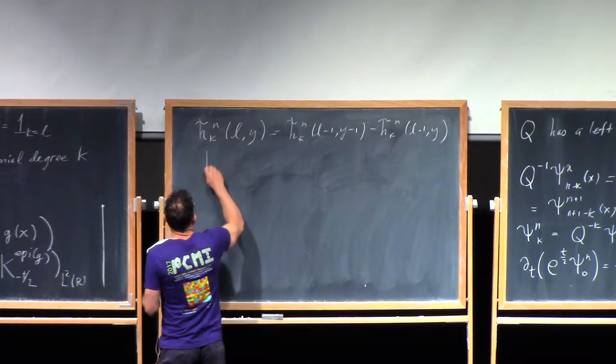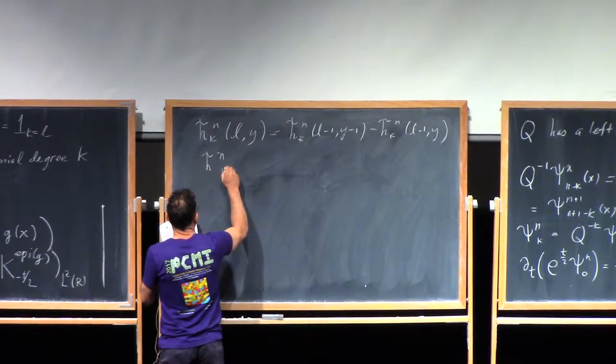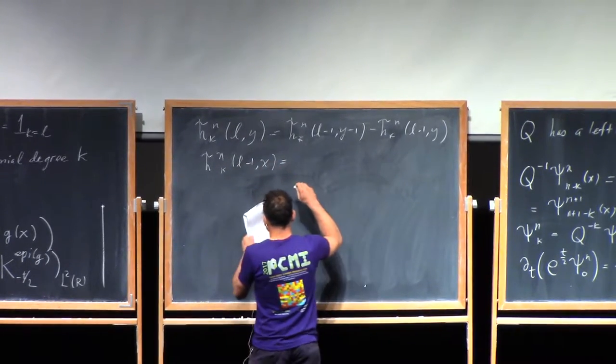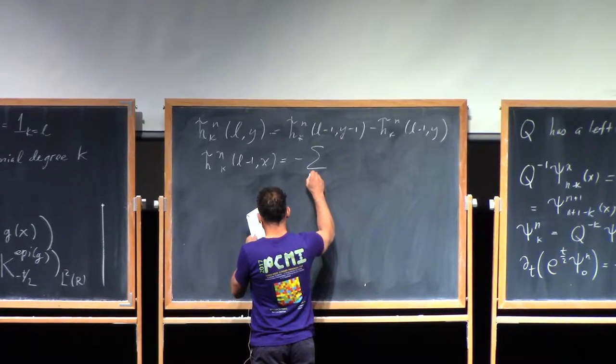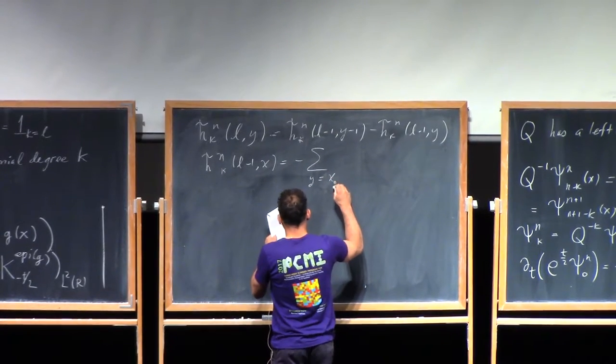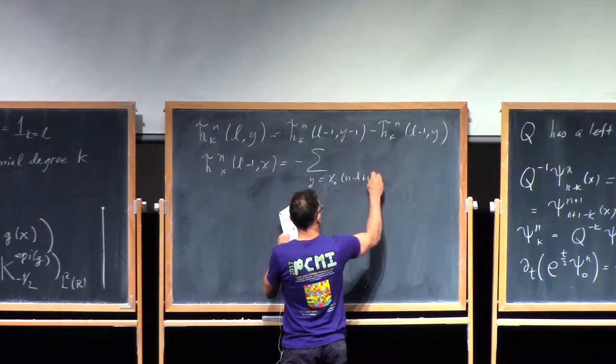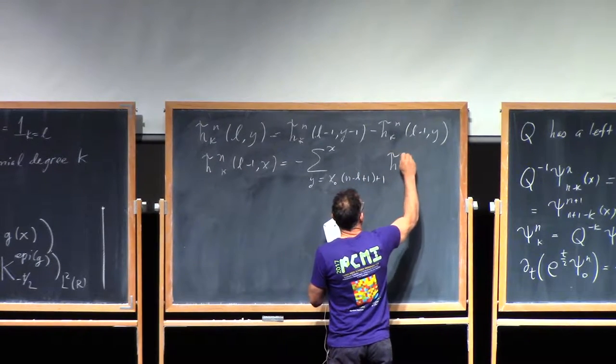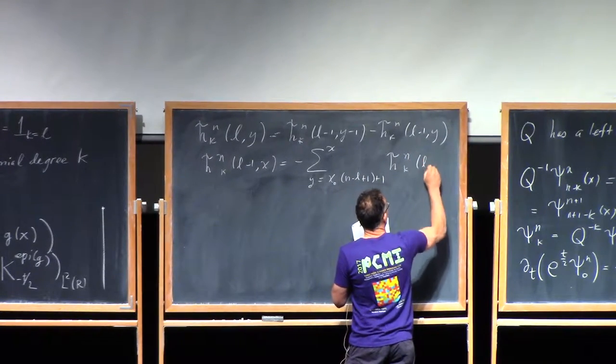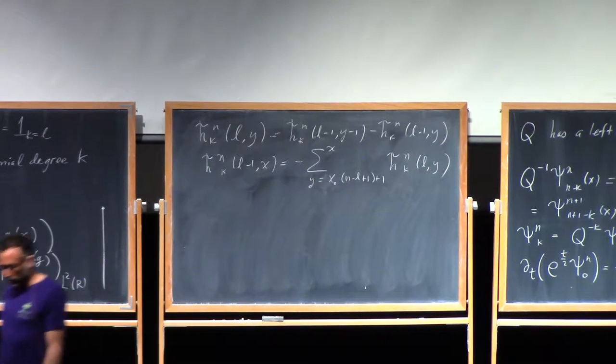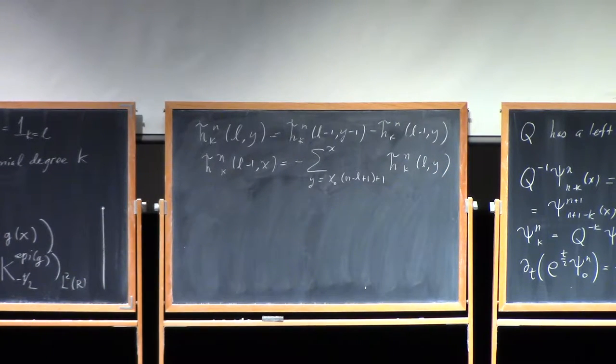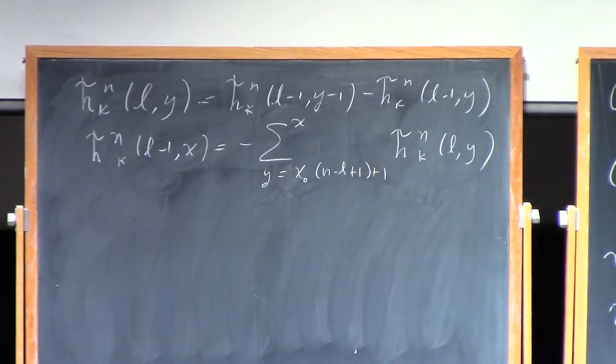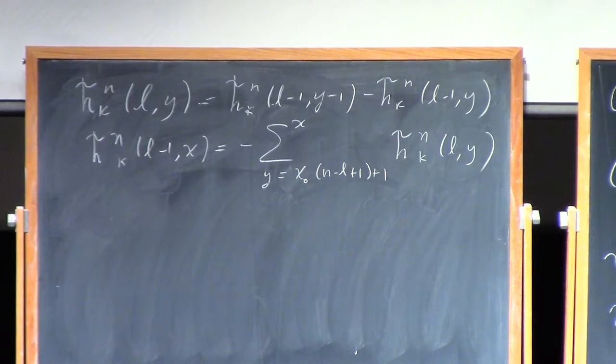It means that h tilde n k l minus 1 of x is actually equal to minus the sum from y equals x0 n minus l plus 1 plus 1 to x of h tilde n k l y. Sorry about this long equation, there's not much I can do about it. But you see, because you have this difference and you know it's zero on the boundary, you can just sum from the boundary to your point and you get your function. That's easy enough.